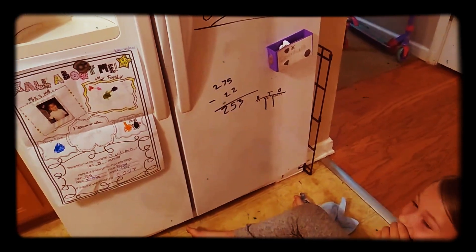Hey, Google. What's 275 minus 22? The answer is 253.